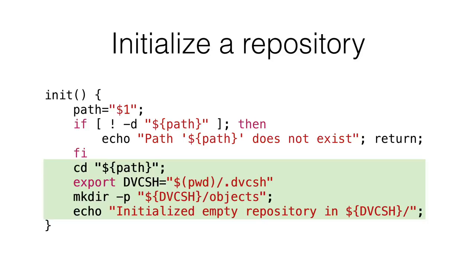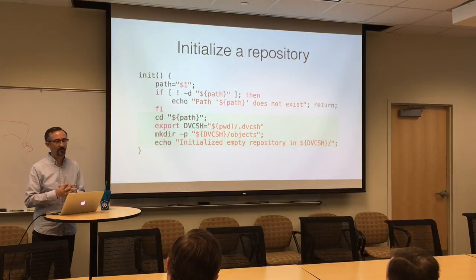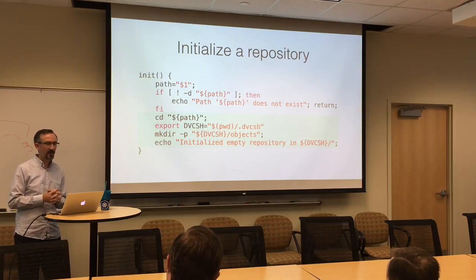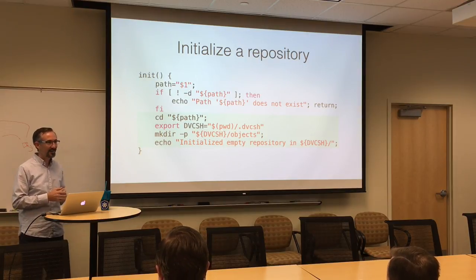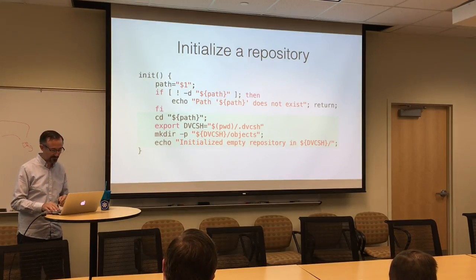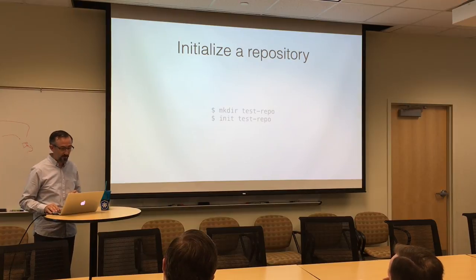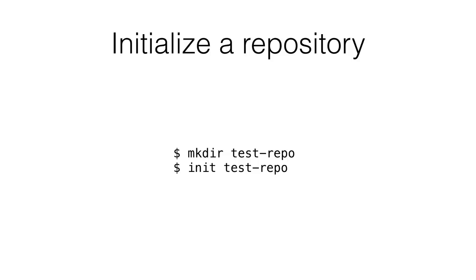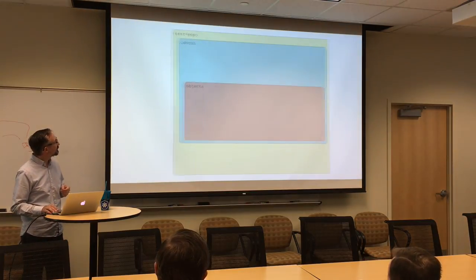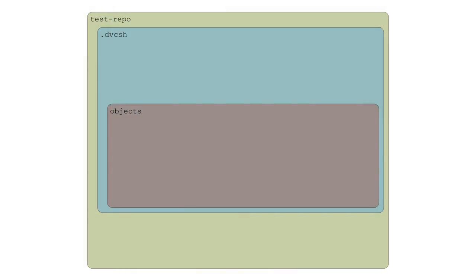I need to state my standard Bourne shell disclaimer: I'm not a professional Bourne shell programmer. I've written 20 years of Bourne shell and do not consider myself a professional Bourne shell programmer, so don't look to this as the right way to do shell stuff. We've sourced our dvc.sh file. We can go ahead and mkdir test-repo and init test-repo. In a picture, the big beige box is test-repo where our source code will live, and inside of that is a .dvc directory, and inside of that is an objects directory. Now we're ready to add some content.